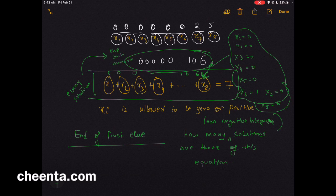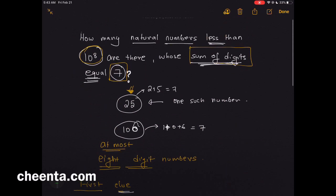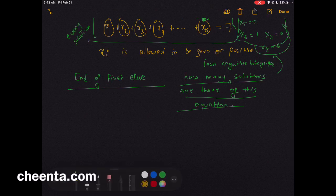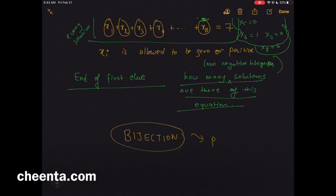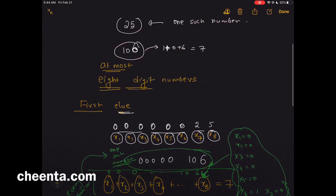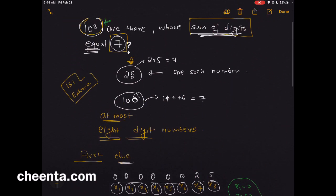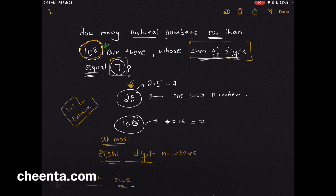So if you can find the number of solutions to this equation, then you can find the count of numbers whose digit sum equals 7 and which are less than 10 to the power 8. This involves an idea from the bijection principle — look at the link in the description to find the next clue and other similar problems. This problem is from the ISI entrance exam but also appeared in other tests and olympiads. Keep doing great mathematics!